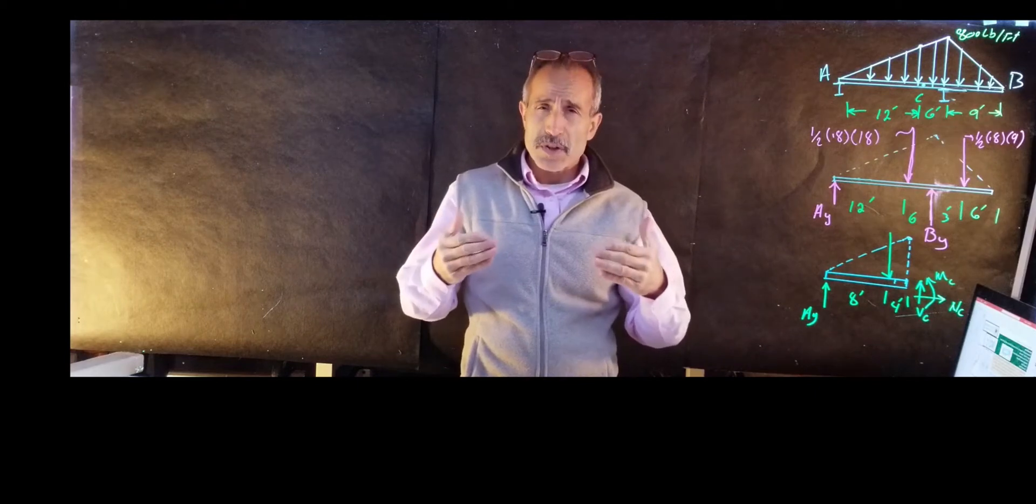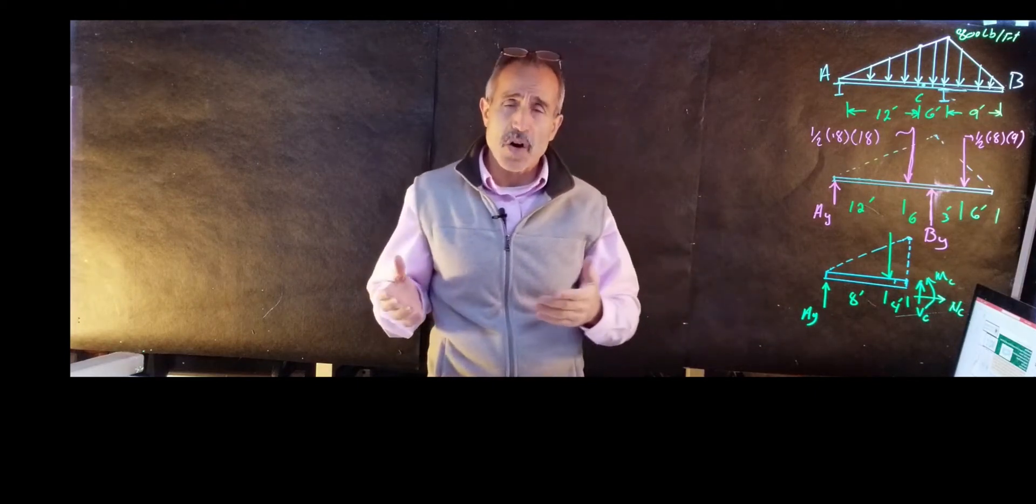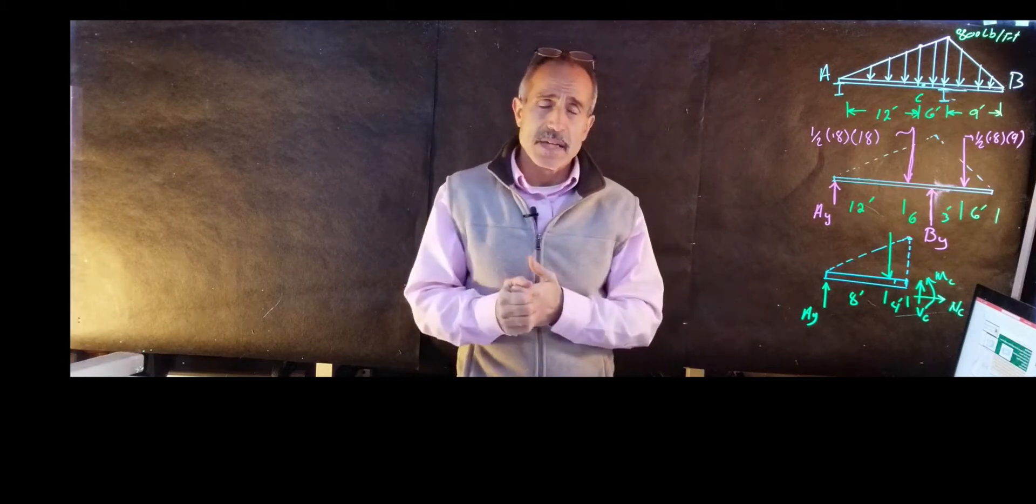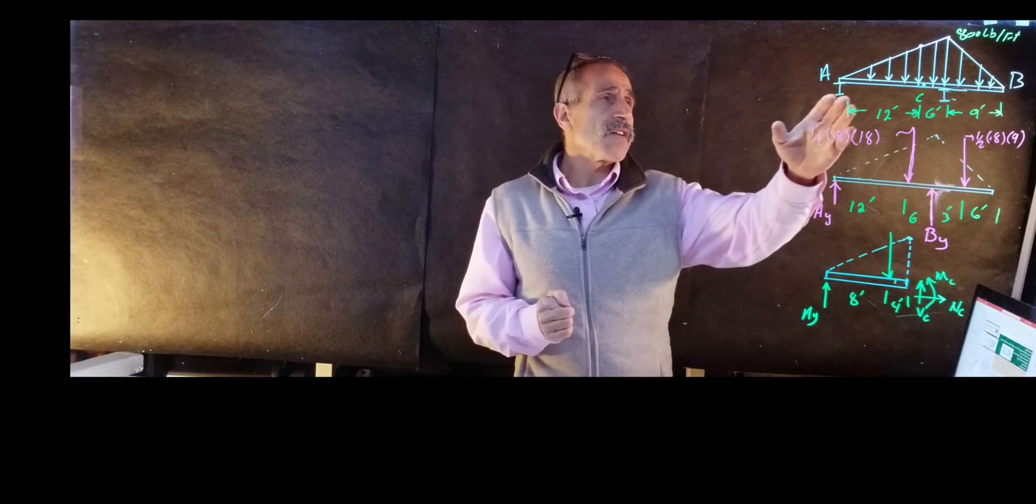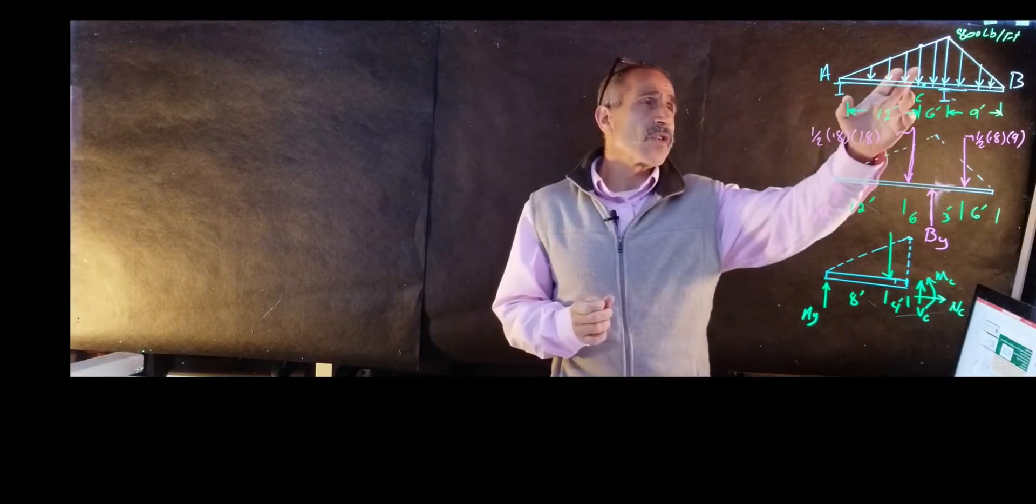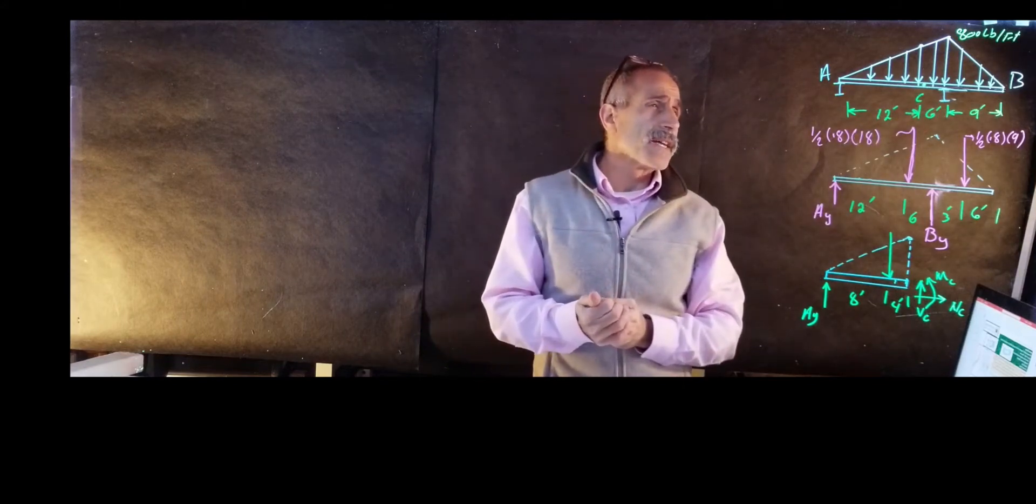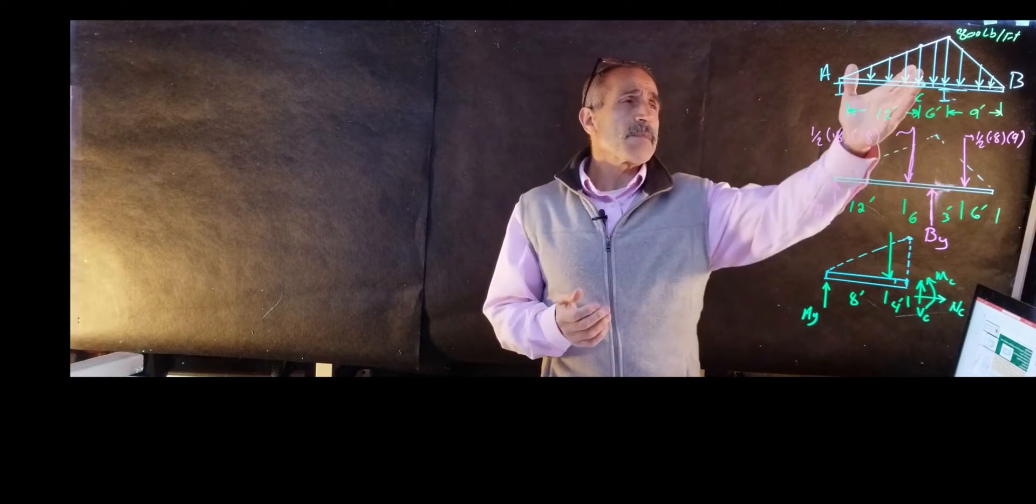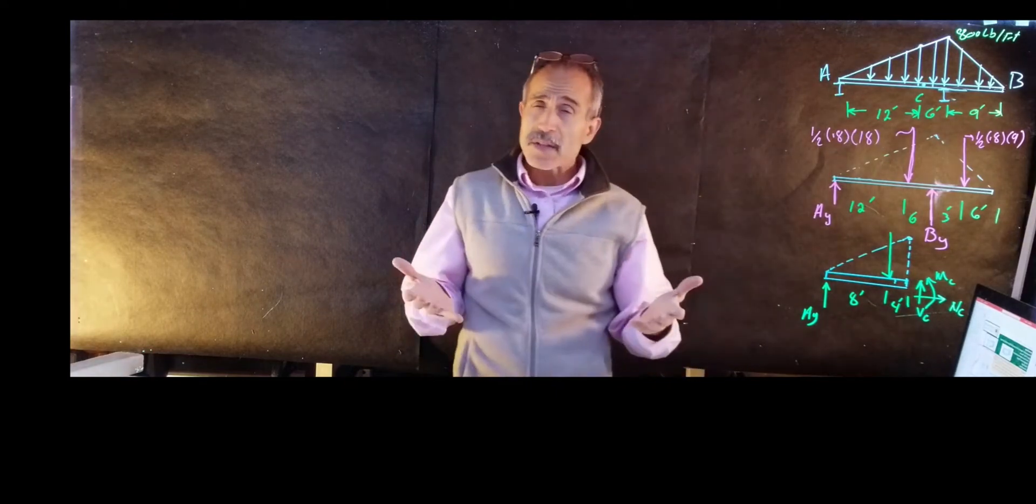We really like to know what those internal forces are doing, like where this beam is going to fail, how much internal force I have, what I have. And if you look at this beam right here, it's subjected to a uniformly loaded triangle load. At the tip is 0.8 kip per foot, or 800 pound per foot. And we'd like to know, if we come at point C, what are those internal forces doing? What are the internal forces?